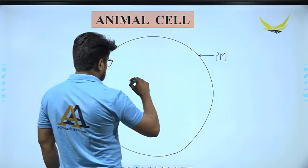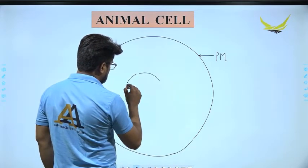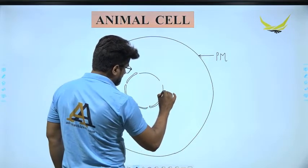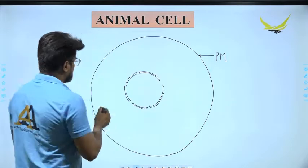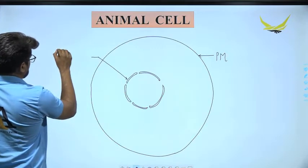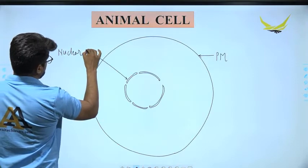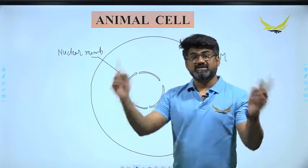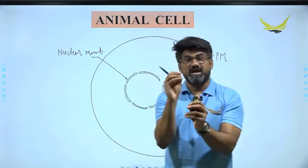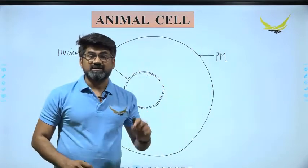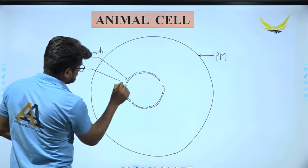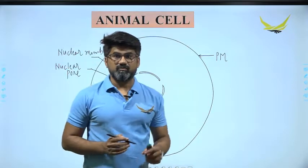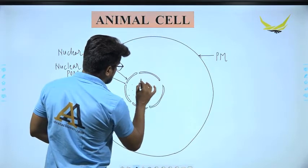At the center of the animal cell there is a double-membranous structure called the nuclear membrane. This double membrane structure contains pores known as nuclear pores. Inside the nucleus there is a colloidal substance called the nucleoplasm.